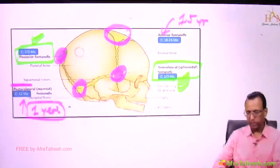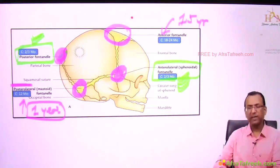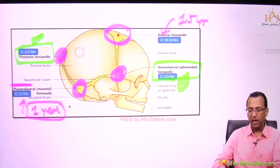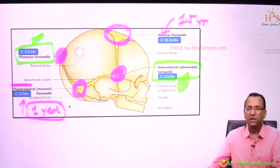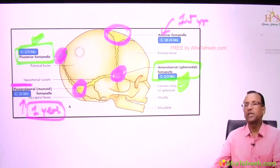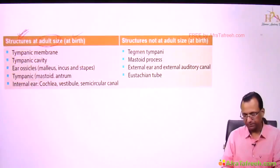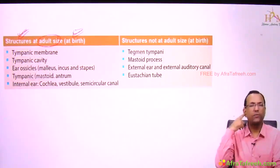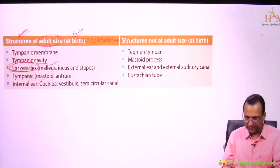You can check CSF pressure through the anterior fontanel — for example, in a case of hydrocephalus such as aqueductal stenosis and internal hydrocephalus. Now, remember: structures which are of adult size at birth are the ear ossicles. The malleus, incus, and stapes do not grow after birth, because the middle ear cavity — the tympanic cavity — is adult size at birth.